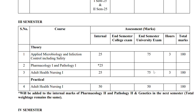The actual university exams are Applied Microbiology and Infection Control and Adult Health Nursing One. These two exams are conducted by the university, with internal marks of 25 and university exam marks of 75, totaling 100 each. The third semester practical for Adult Health Nursing One has 50 internal marks and 50 external marks, totaling 100.